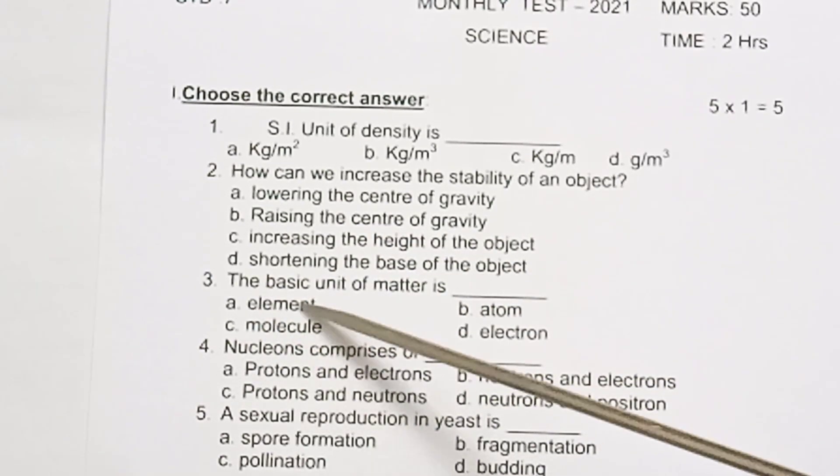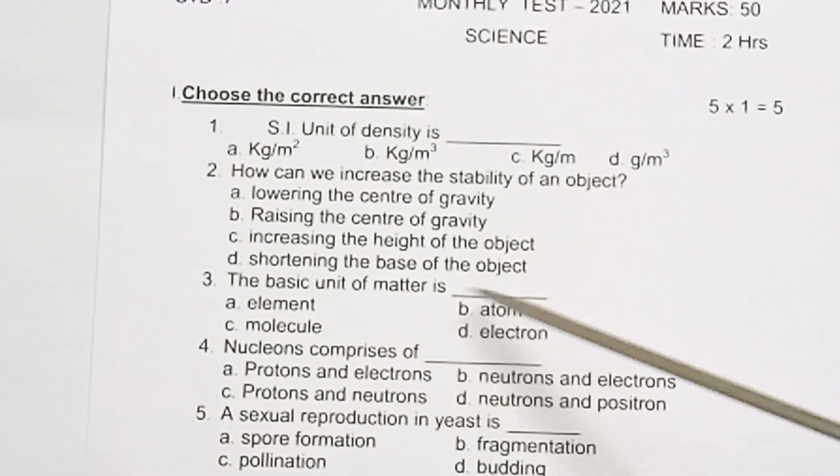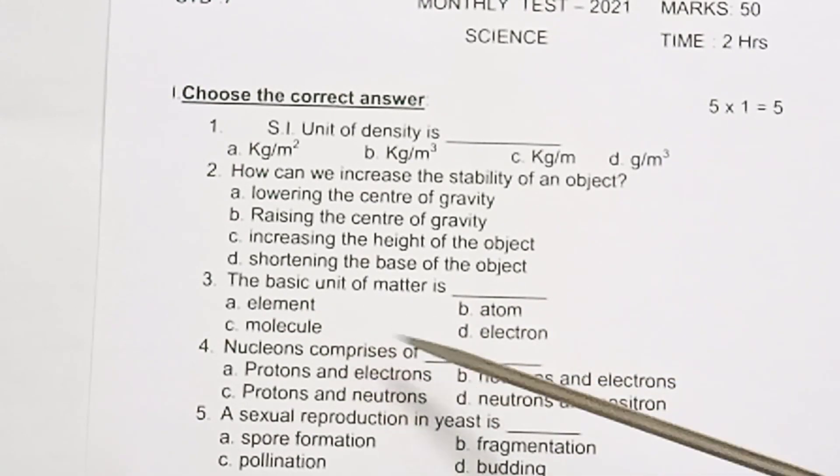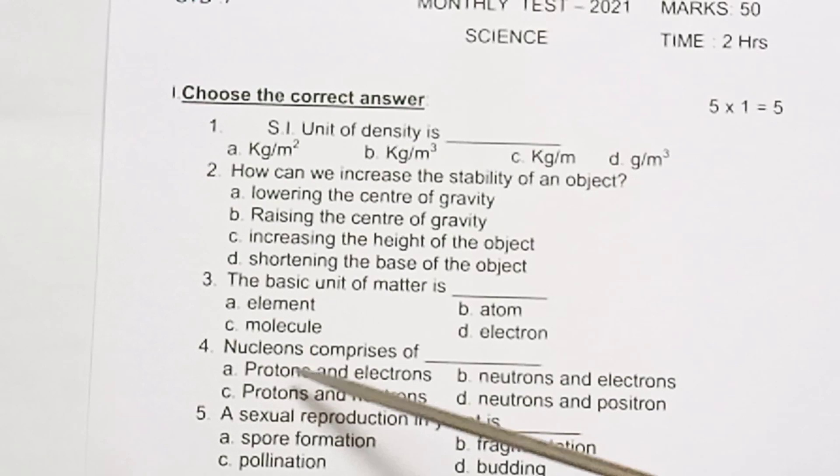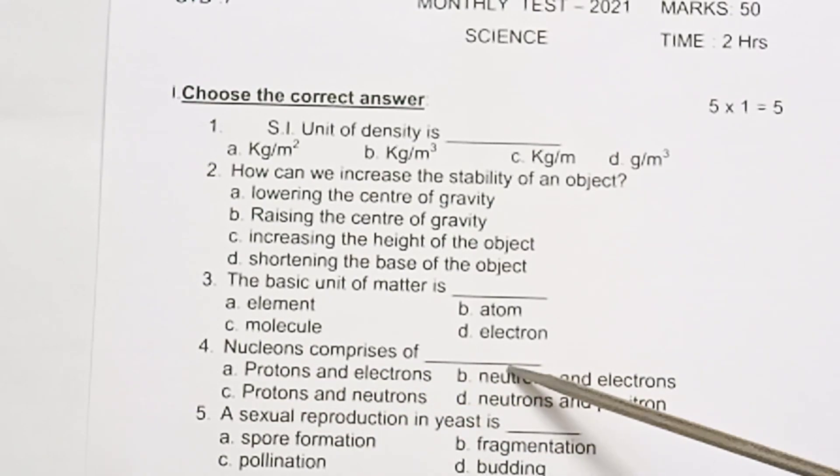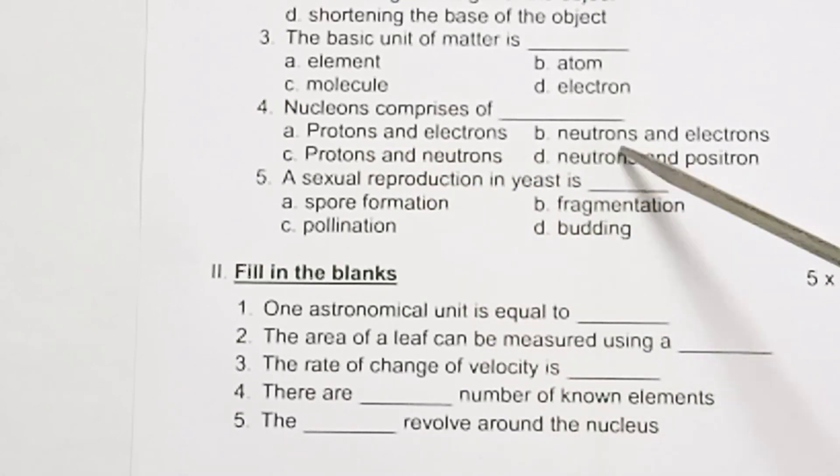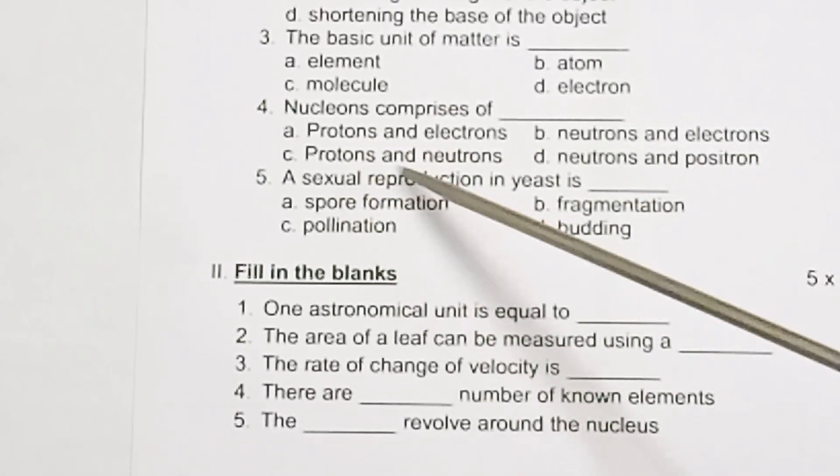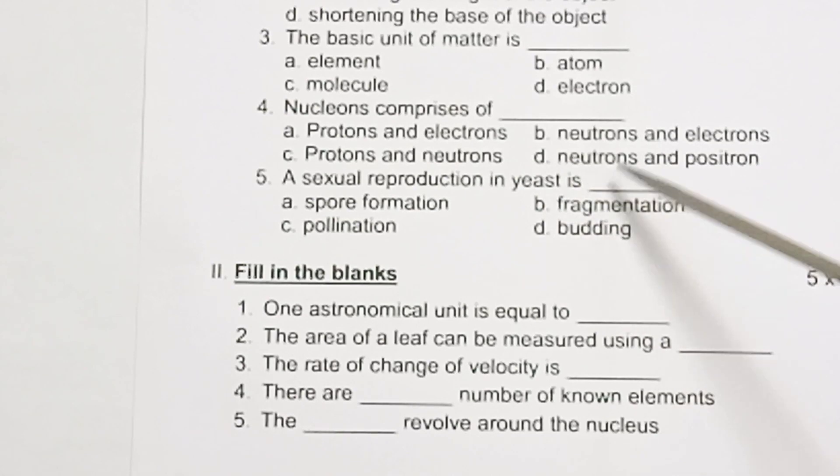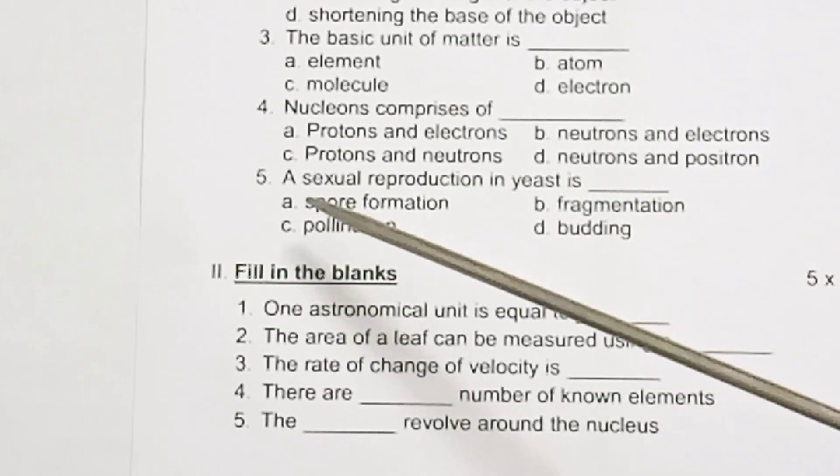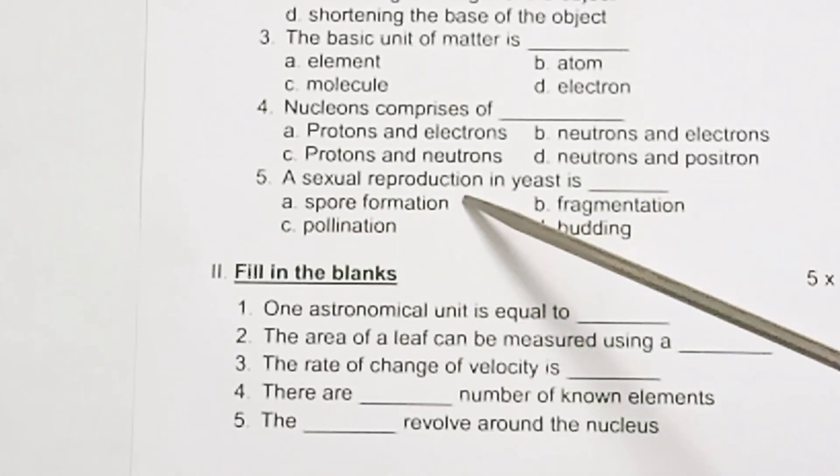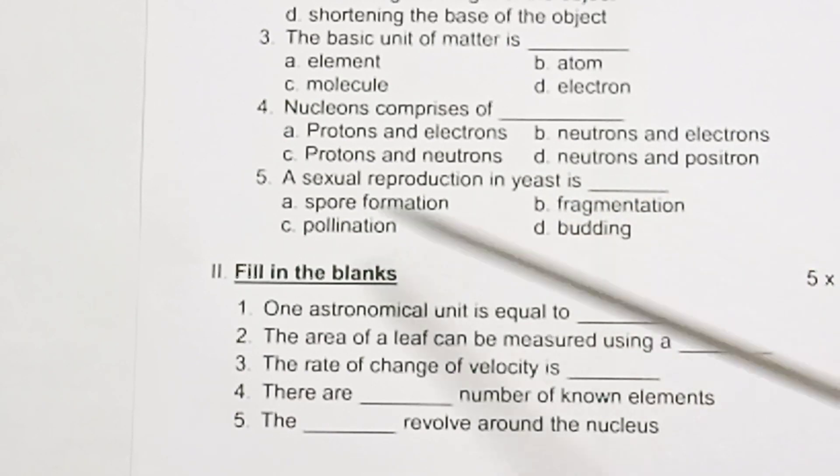Three: The basic unit of matter is: element, atom, molecule, electron. Fourth one: Nucleons comprises of: A. protons and electrons, B. neutrons and electrons, C. protons and neutrons, D. neutrons and positron. Fifth one: Sexual reproduction in yeast is: A. spore formation, B. fragmentation, C. pollination, D. budding.